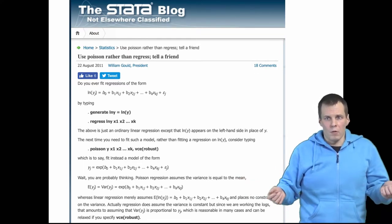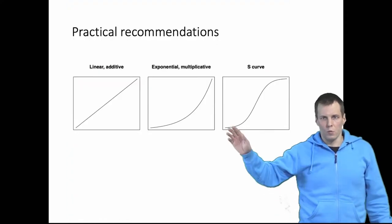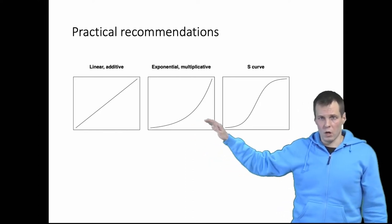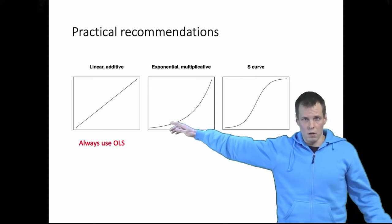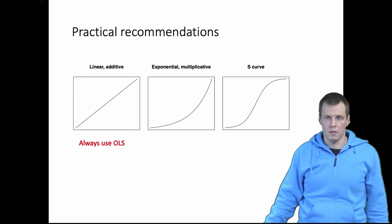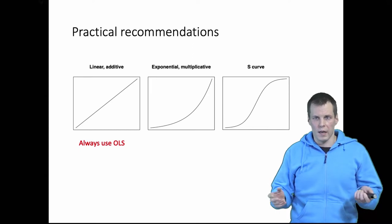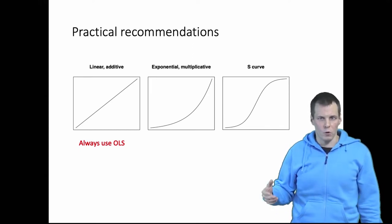So what are the practical recommendations? Once you have decided that you want to use one of these transformations then what's the modeling technique that you should apply? So linear additive model least squares always. No reason to use anything else. OLS is best and weighted least squares could be slightly more efficient in some scenarios but it's not worth the effort to do that.